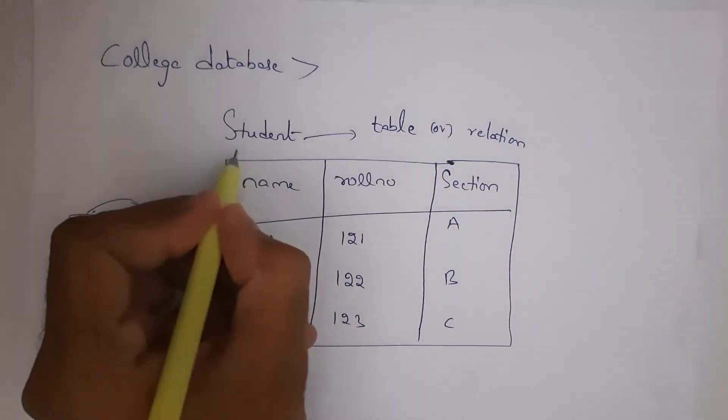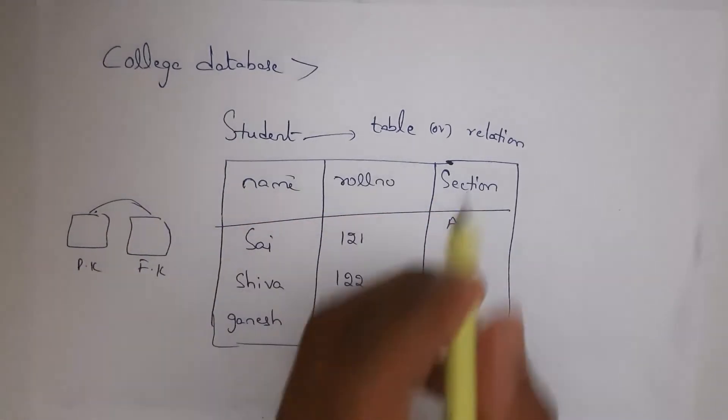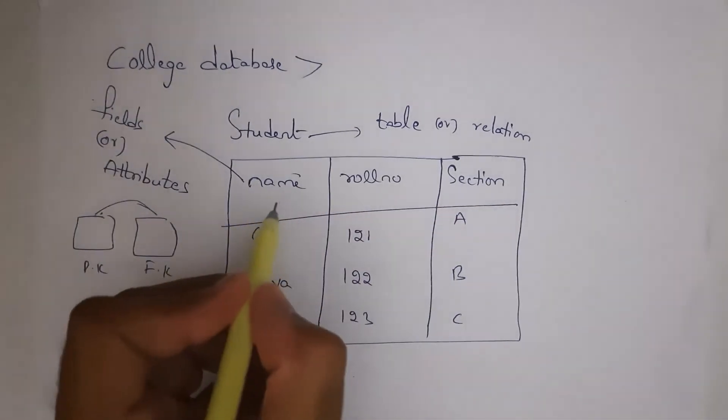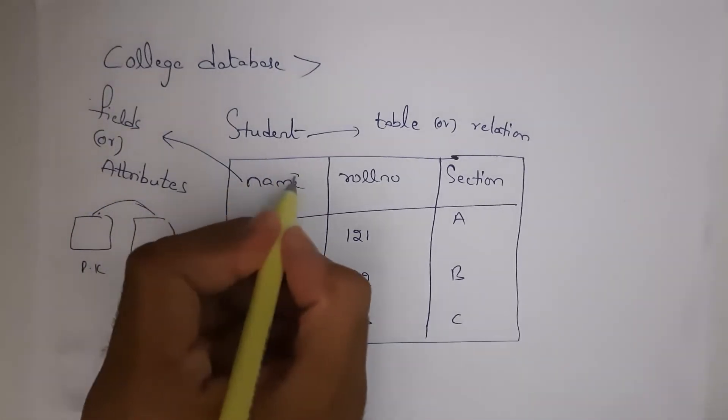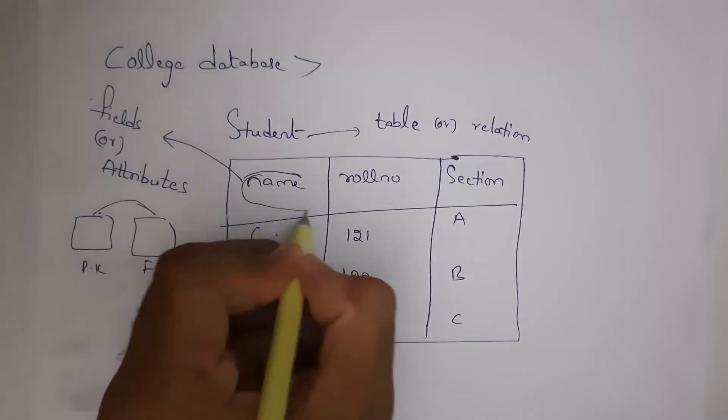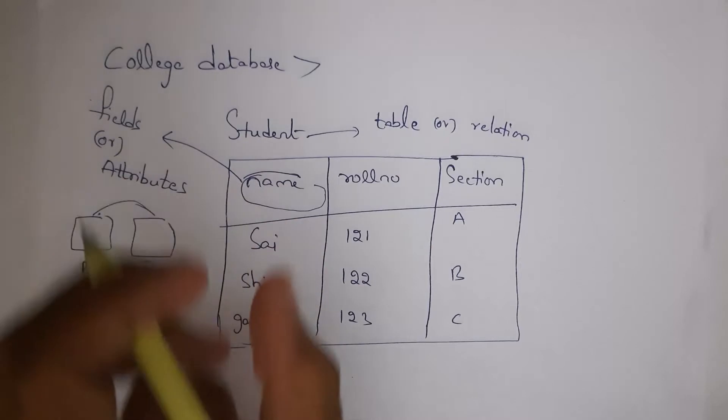You can call this student as table or relation. Whereas name, roll number and section are column names. You can also call column names as fields or attributes. For example, if you consider name column, you can call it name field or name attribute. All are same, don't get confused.